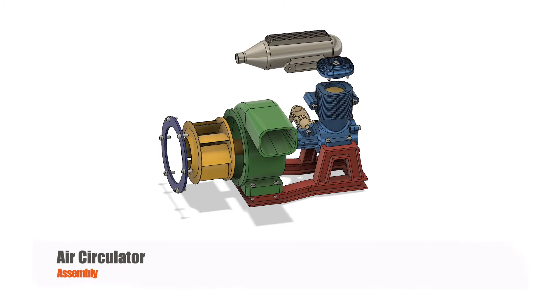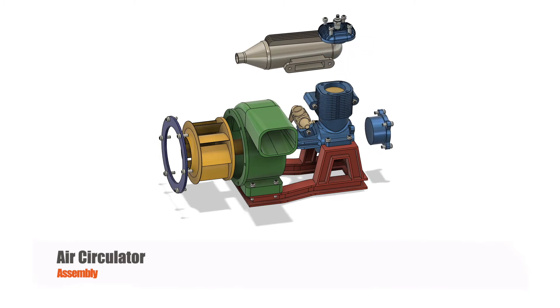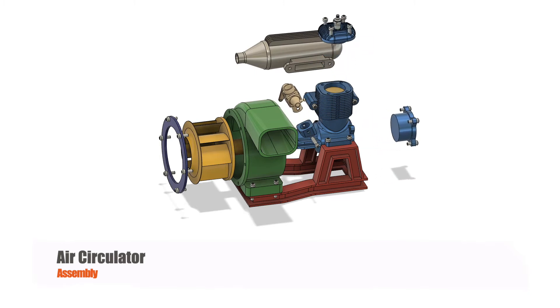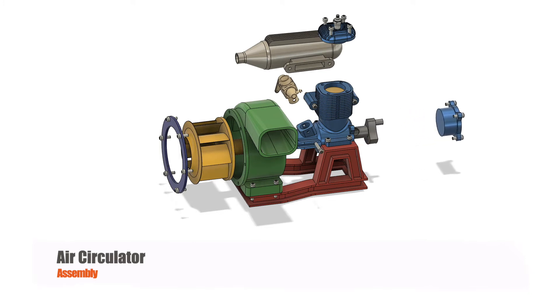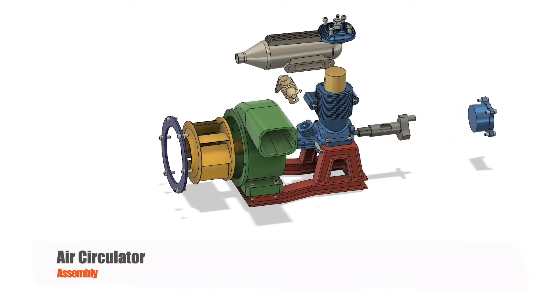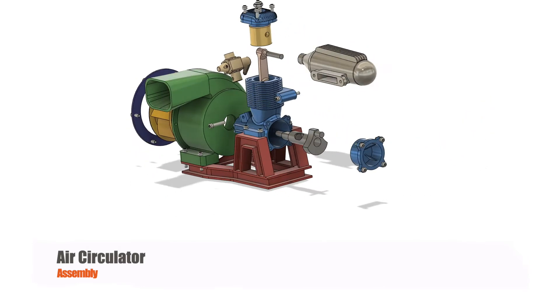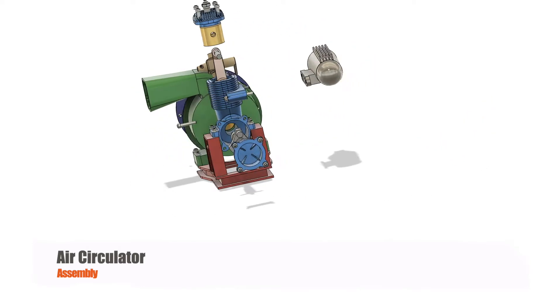In this video series we will design all the parts of Air Circulator: impeller, casing, engine block and head, muffler, carburetor, crankshaft, connecting rod and many other small parts, and also assemble it with animation.